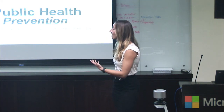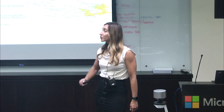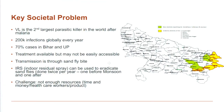The problem is using AI to prevent VL. As Rishabh presented yesterday, VL is a huge public health problem — in fact, it's the second largest parasitic killer in the entire world after malaria. Every year there are about 200,000 infections, and 70% of those cases occur in India, specifically in Bihar and UP. There is a treatment available for VL, but unfortunately it's not widely available and not easily accessible.